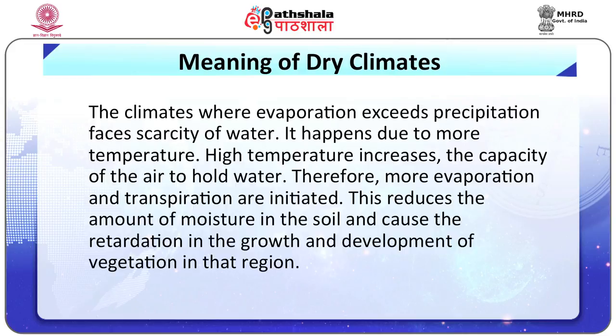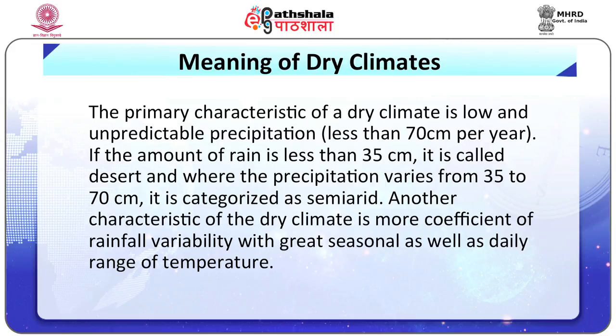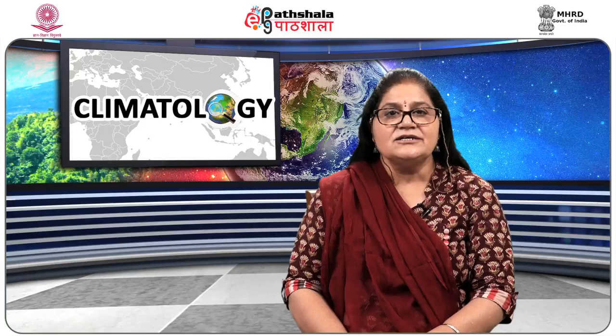The primary characteristic of a dry climate is low and unpredictable precipitation – less than 70 centimeters per year. If the amount of rain is less than 35 centimeters, it is called desert, and when the precipitation varies from 35 to 70 centimeters, it is categorized as semi-arid. Another characteristic is more coefficient of rainfall variability with great seasonal as well as daily range of temperature. These climates are divided into two types: dry desert climate and semi-arid climate.